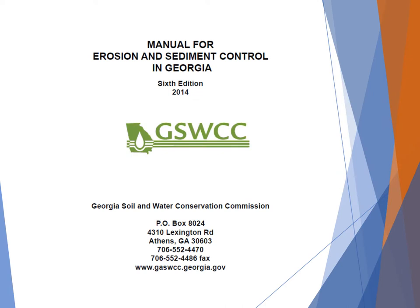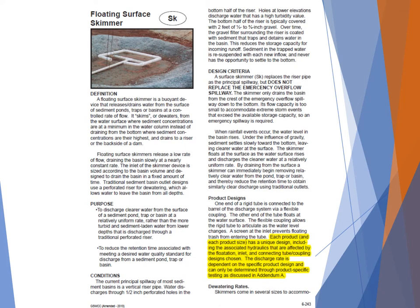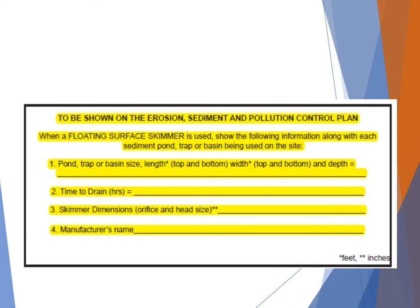When Georgia updated their erosion and sediment control manual, they asked TRI to do testing and research, resulting in new standards for floating surface skimmers. The manual includes a discussion about how each product and size has a unique design and discharge rate that should be determined based on full-scale as-installed testing. Georgia also requires a standard note on most plans specifying basin size, time to drain, skimmer dimensions including orifice size and head, and the manufacturer's name so flow rates can be verified.